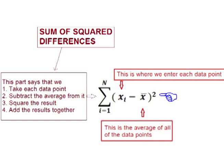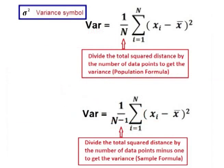The formula then states to square each answer. The epsilon means to then add the squared totals together. We then divide by the total number of data points to get the average square distance from the mean. This is also known as the variance.